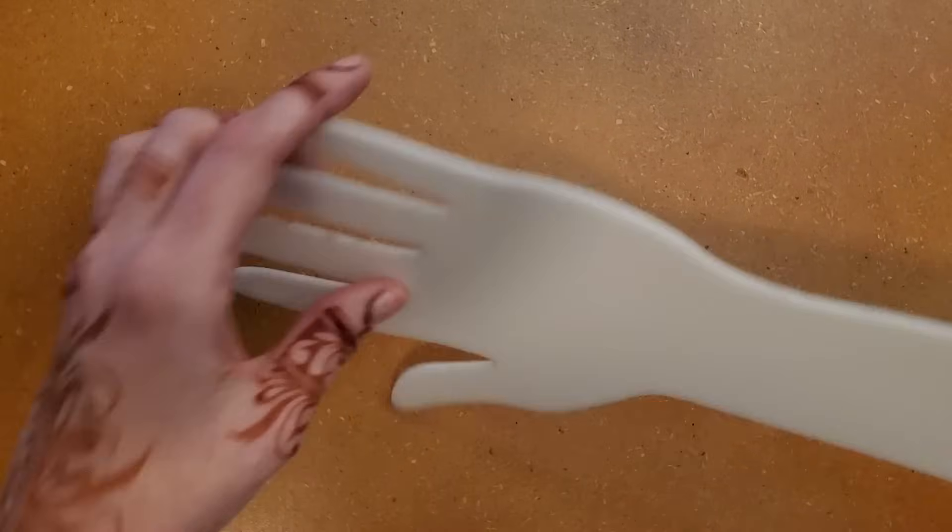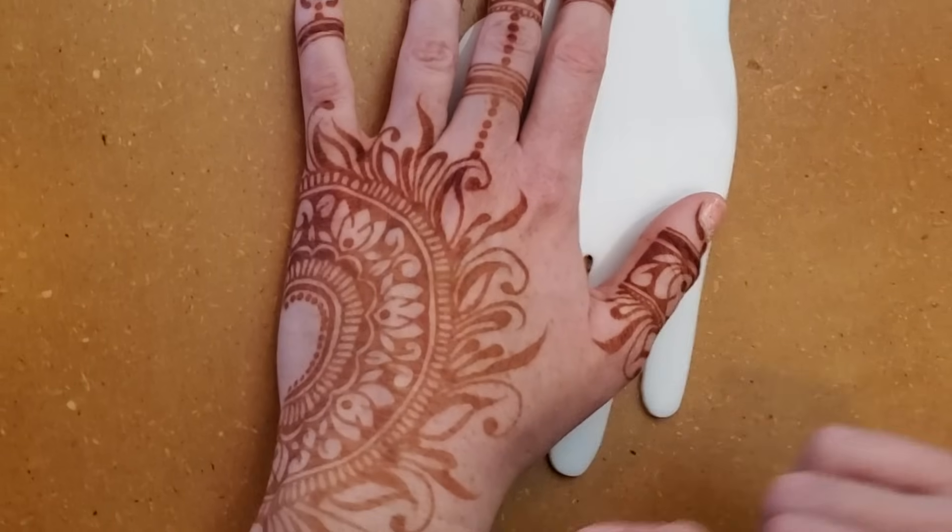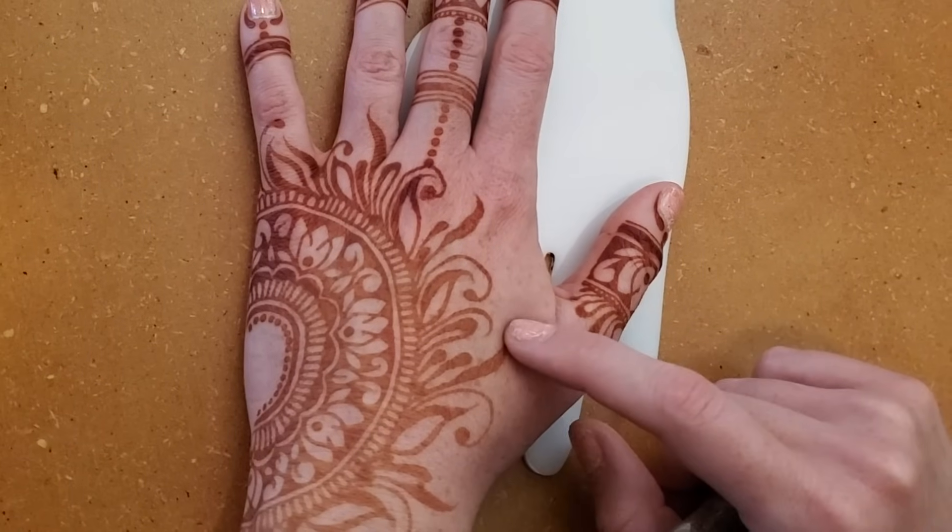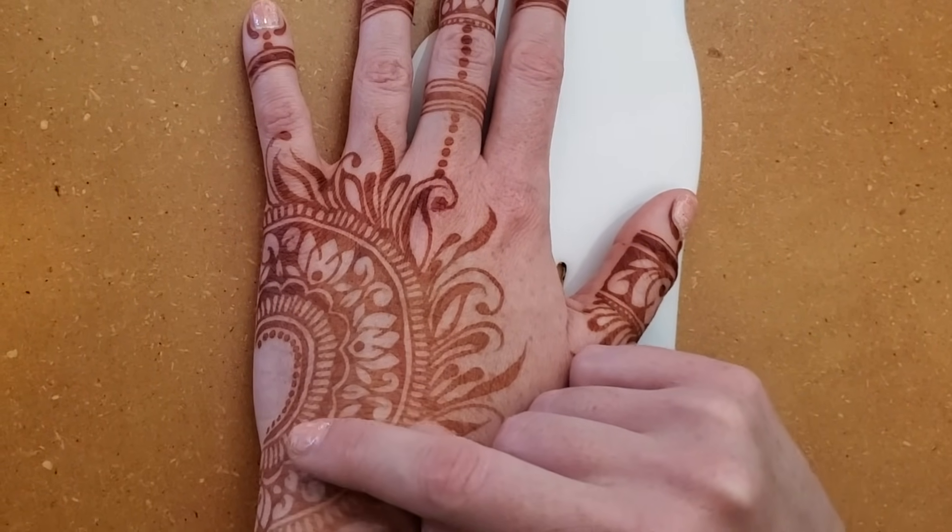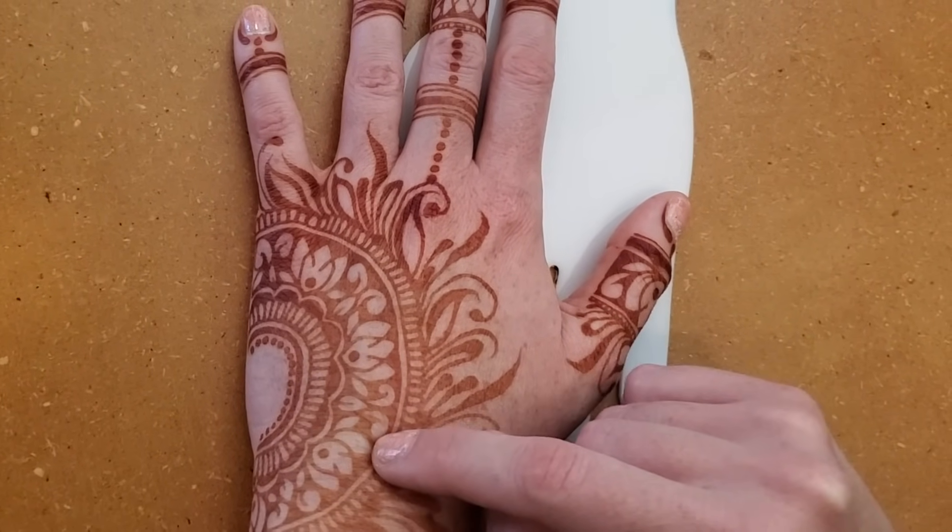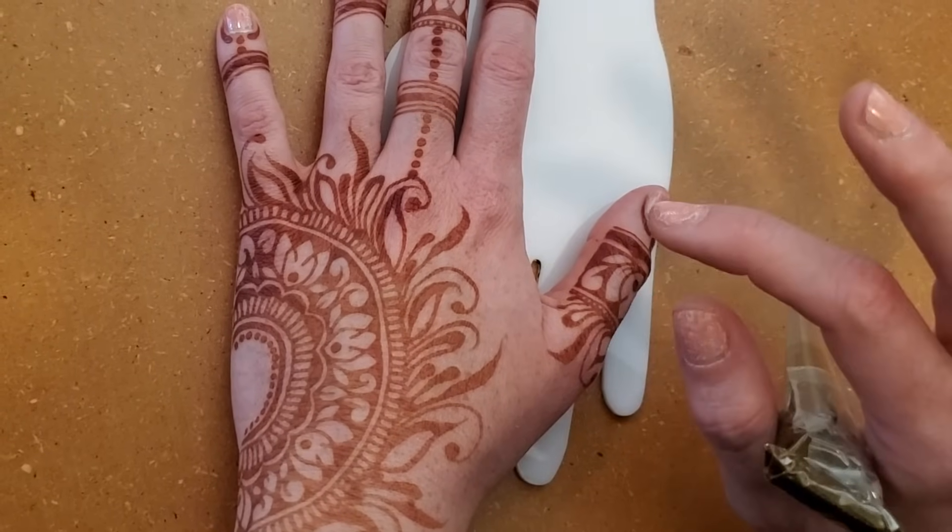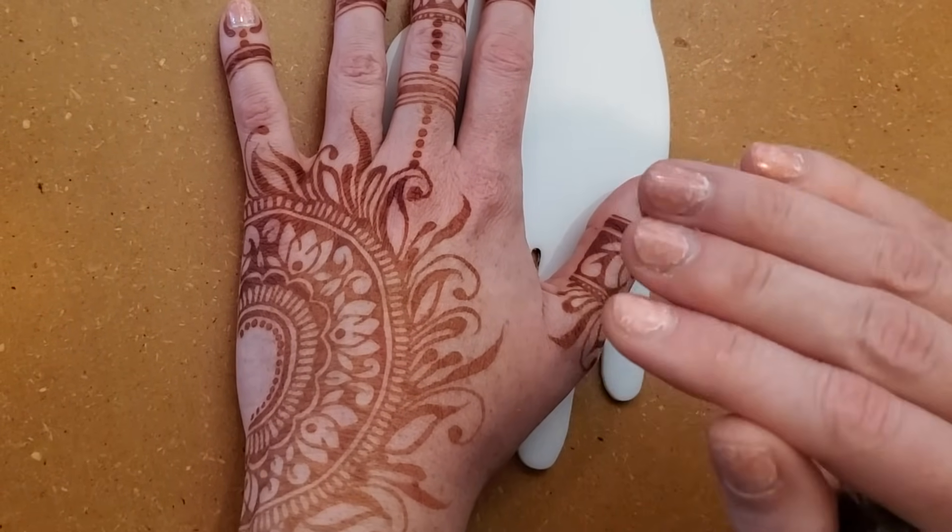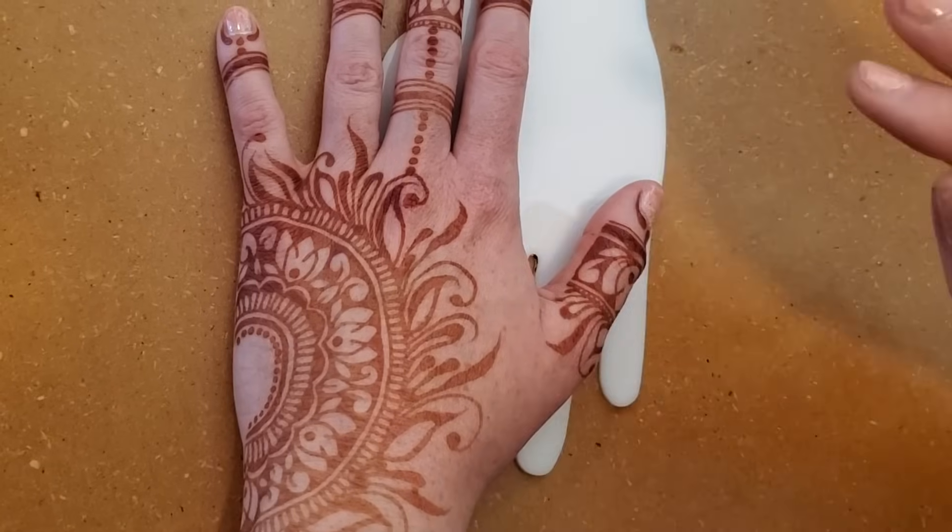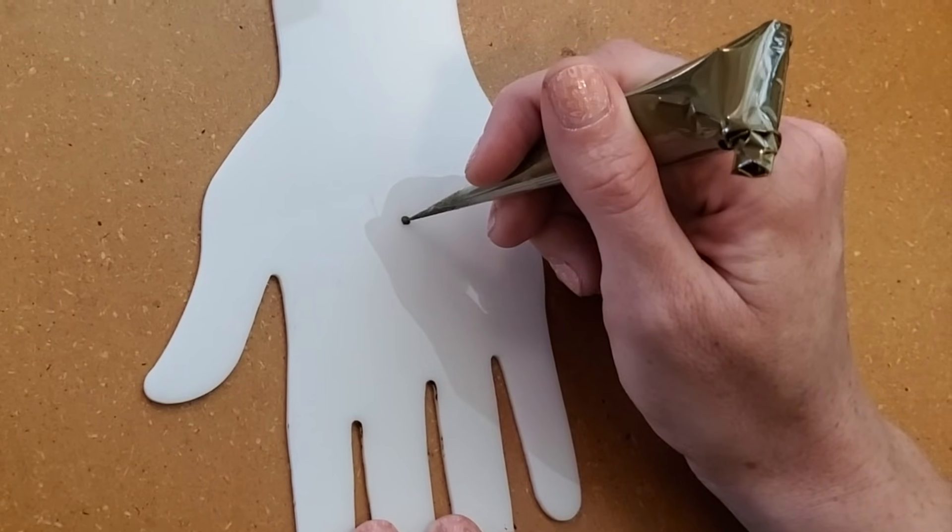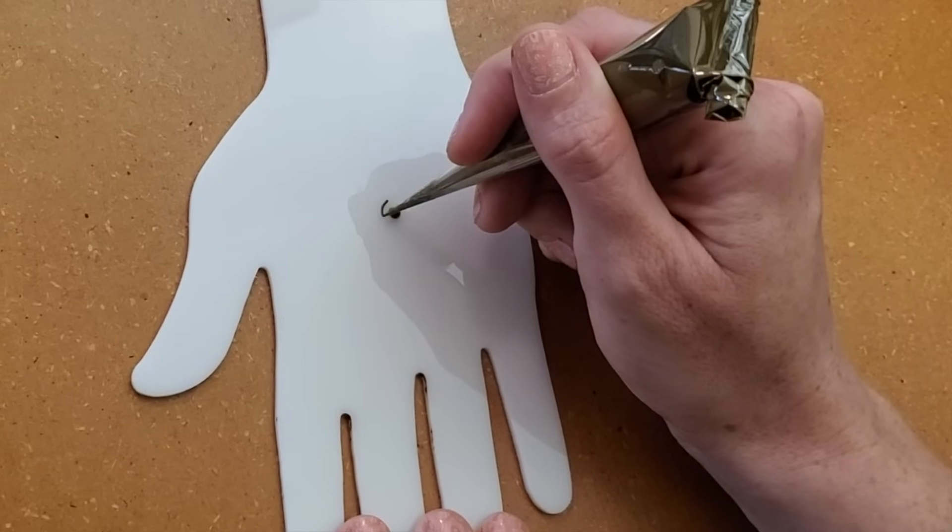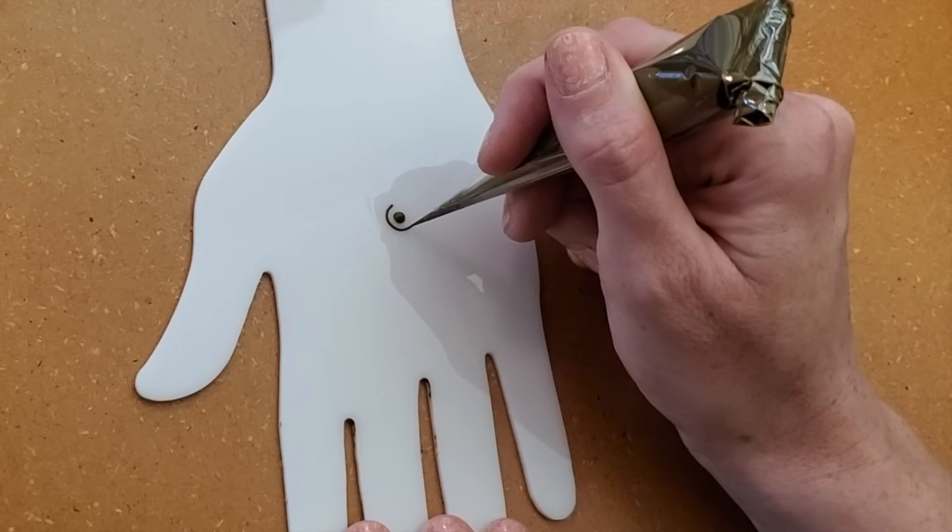When you look at a henna design it looks very complicated, but we are building it up one piece at a time. It's just like a layered cake. Yes, they're gorgeous at the end, but they all start by building up from the bottom to the top. So when you look at a blank hand, don't try and envision the entire design there, just start in one place and go from there.